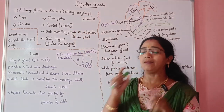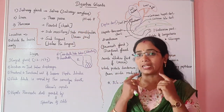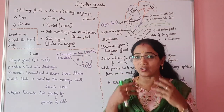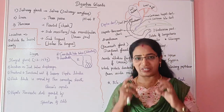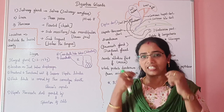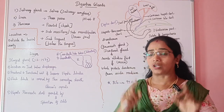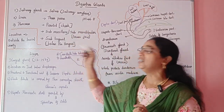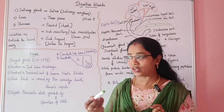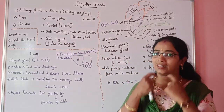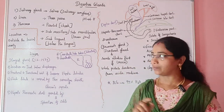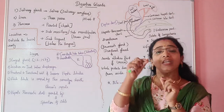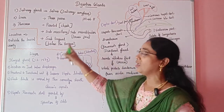The first part is the parotid gland, which is located in the cheek region. The second is the submaxillary or submandibular gland, located at the lower jaw. The third is the sublingual gland, which is below the tongue.